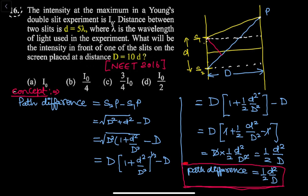My dear students, first understand the concept. If I need to find the path difference, as you can see in this figure, the path difference will be calculated as S₂P minus S₁P, and its value comes out to be: under root of (D² + d²) minus D, where D is the capital D (screen distance) and d is the slit separation.